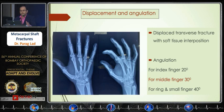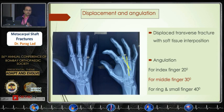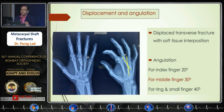The third point is displacement and angulation. In an isolated metacarpal shaft fracture, acceptable angulation is: 20 degrees for the index finger, 30 degrees for the middle finger, and 40 degrees for the ring and small finger. These fractures may show radiological union very late, or may not unite at all, due to soft tissue interposition between the intermetacarpal muscles.